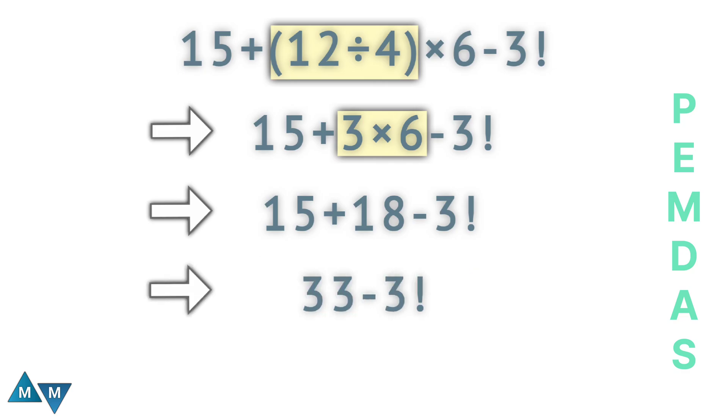Finally, we are left with 33 minus 3 factorial. Let's solve this factorial part. What is factorial in mathematics? When a number has this little exclamation mark, we call it a factorial.